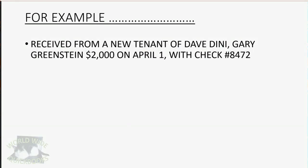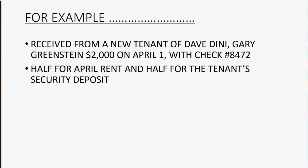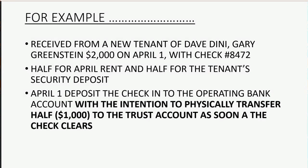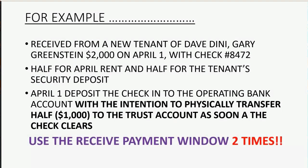For example, let's imagine we received from a new tenant of Dave Deeney — Gary Greenstein — $2,000 on April 1 with check number 8472. Gary told us that half of the check is for April's rent and the other half is for the tenant's security deposit. So on April 1, we physically deposit the check into the operating bank account, with the intention to physically transfer half to the trust account as soon as the check clears. To record this, we use the received payment window two times.